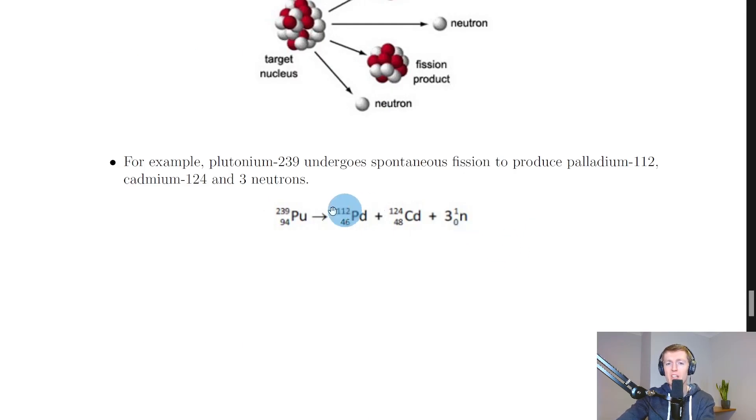And another way to tell that this is spontaneous and not induced is that you've not got anything causing the reaction to happen on this left-hand side. So if we had a neutron on this left-hand side of the reaction causing this plutonium nucleus to split, then that would be an induced fission reaction, whereas here we've got nothing next to the plutonium on the left-hand side, so it must be a spontaneous fission reaction.